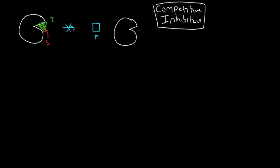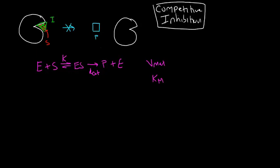Let's think about this in terms of our kinetic mechanism. Enzyme plus substrate react together in equilibrium to form an enzyme-substrate complex, which then gets converted to products plus a free enzyme. The rate constant Kcat is very much related to Vmax, and this equilibrium constant is very much related to Km. Our goal now is to figure out how adding a competitive inhibitor will influence Vmax and Km.